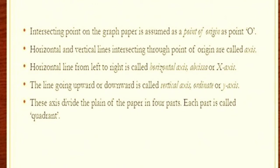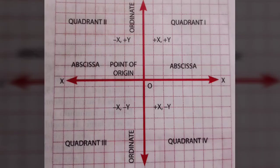And the axes which divide the graph in 4 parts, each part is known as quadrant. These are the definitions, you can see clearly visible on it.